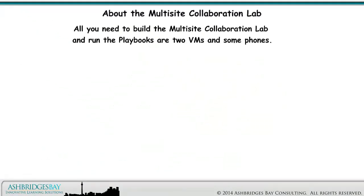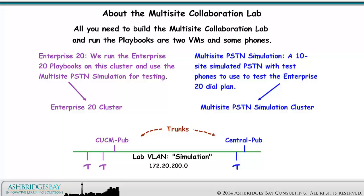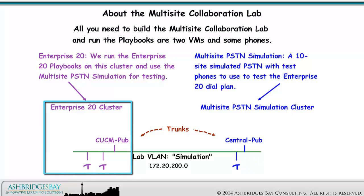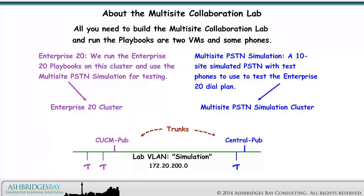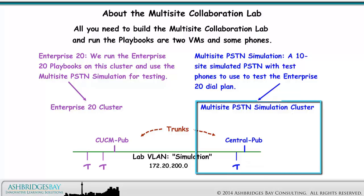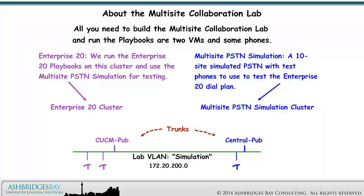All you need to build the Multi-Site Collaboration Lab and run the playbooks are two VMs and some phones. On the left is the Enterprise 20 cluster. We run the Enterprise 20 playbooks on this cluster and use the Multi-Site PSTN simulation for testing. On the right is the Multi-Site PSTN simulation cluster — a 10-site simulated PSTN, with test phones to use to test the Enterprise 20 dial plan. We use different kinds of trunks to connect the clusters.